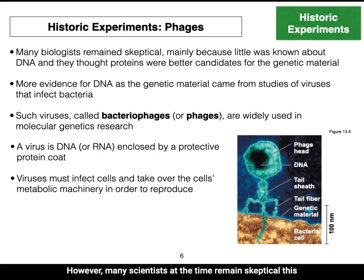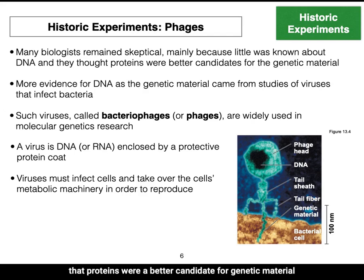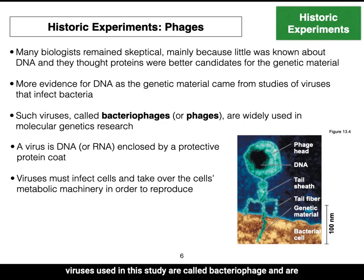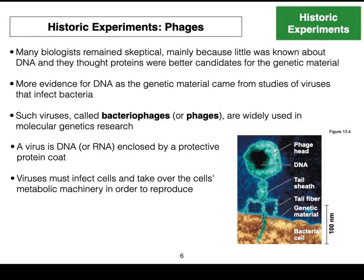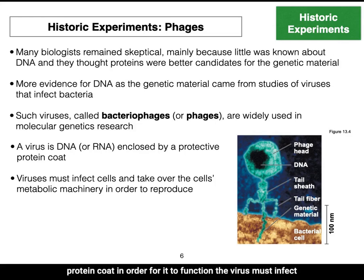However, many scientists at the time remained skeptical because very little was known about DNA. Many believed that proteins were a better candidate for genetic material. More evidence came from studies on viruses and bacteria. Viruses used in this study are called bacteriophage and are widely used in molecular genetic research. A virus is essentially DNA or RNA enclosed in a protective protein coat, and in order to function, the virus must infect cells and take over the metabolic machinery to reproduce.